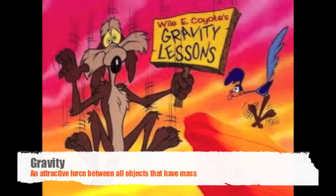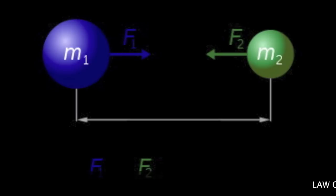Which brings us to what is known as the law of universal gravitation. The law of universal gravitation states that all objects with mass are attracted to each other. So every object in the universe is attracted to every other object in the universe.